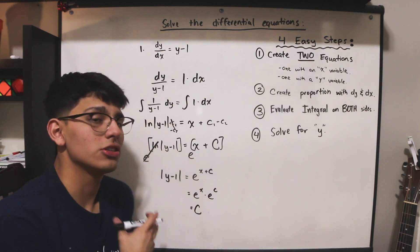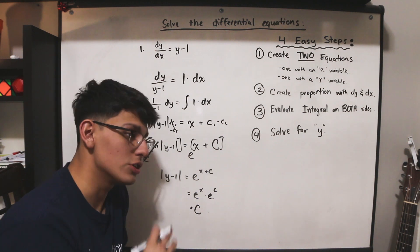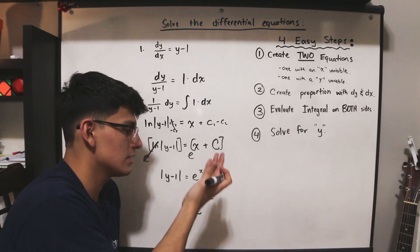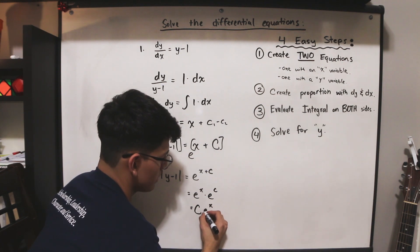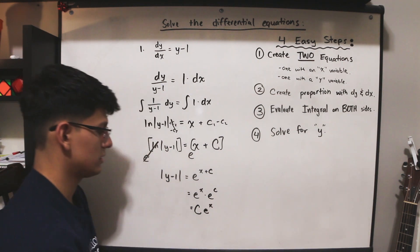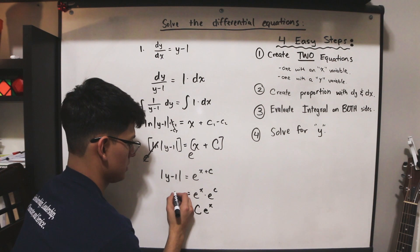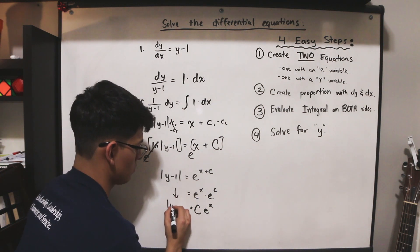And e to the c is yet another constant, so we can just rewrite that as big C. Now, c in this case just represents an arbitrary constant, which means that it is just a plain out number. And e to the c, well, is just a number. And so we have e to the x, because x is our variable. And we have c e to the x. And then we still have this absolute value sign, y minus 1.